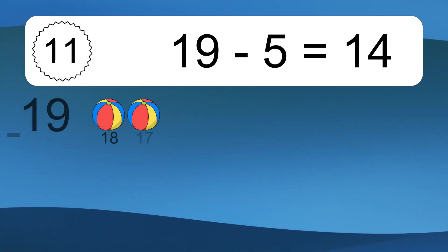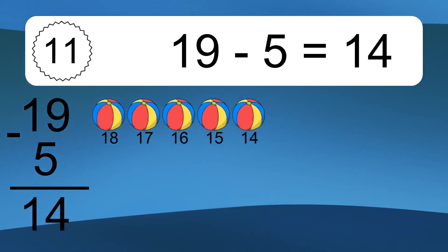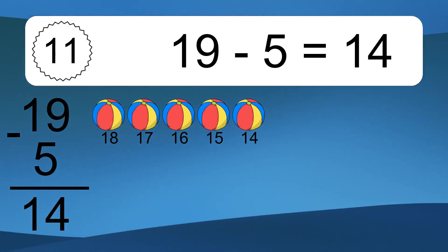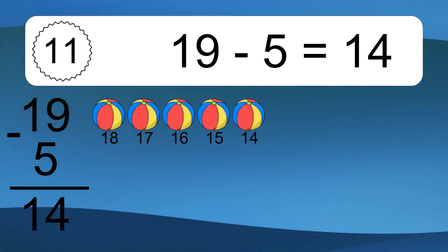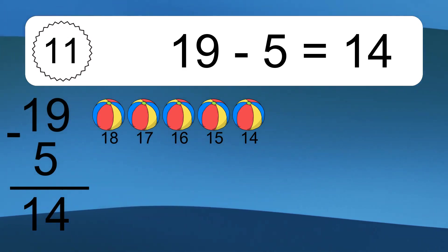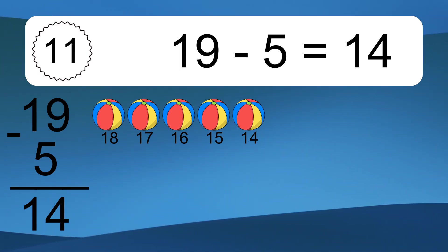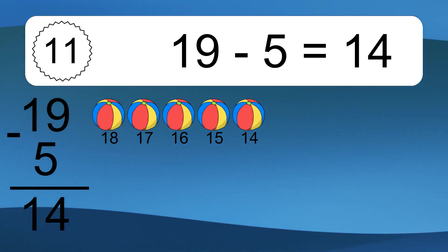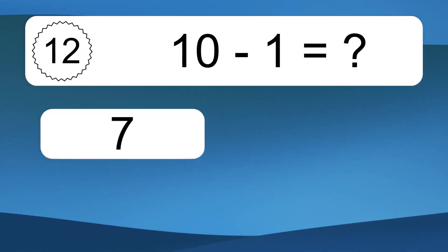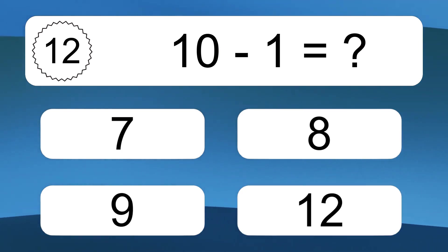13 minus 10 equals 3. Let's count it: 12, 11, 10, 9, 8, 7, 6, 5, 4, 3. 19 minus 5 equals what?